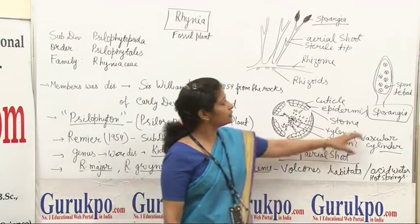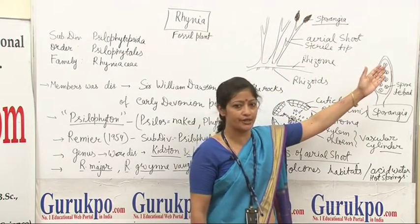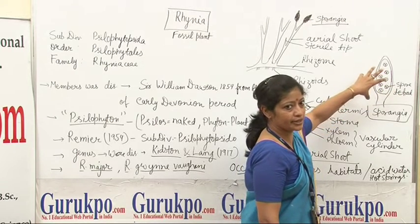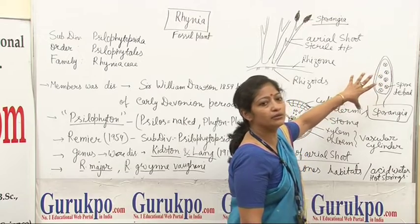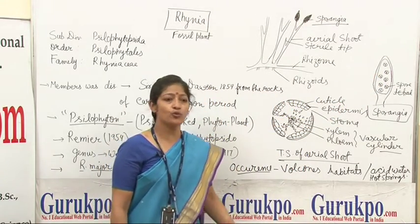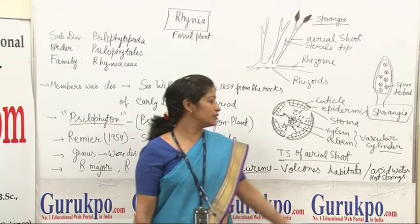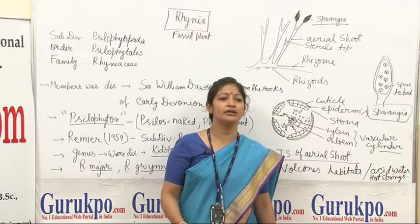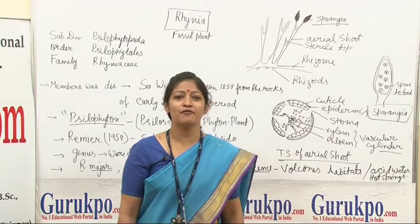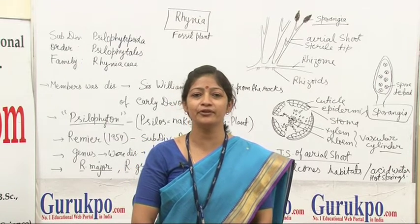If we see the section cutting of the sporangia, spore tetrads are also reported in this structure. These Rhynia plants mostly occur in volcano-prone areas or hot spring areas which contain acidic water. Thank you for watching this video; for more detail, visit www.gurukpo.com. Thank you.